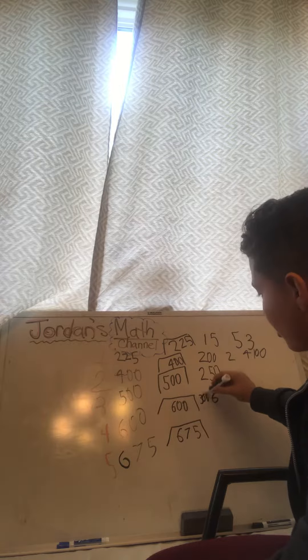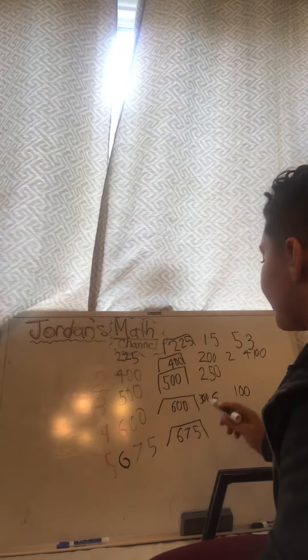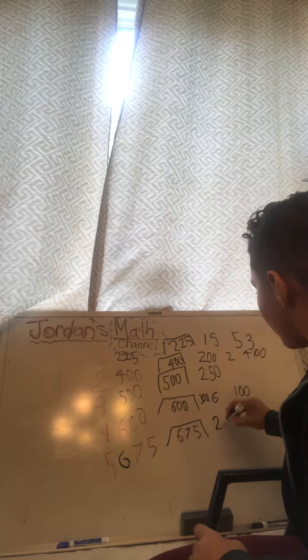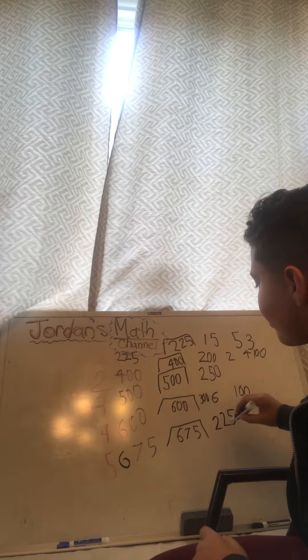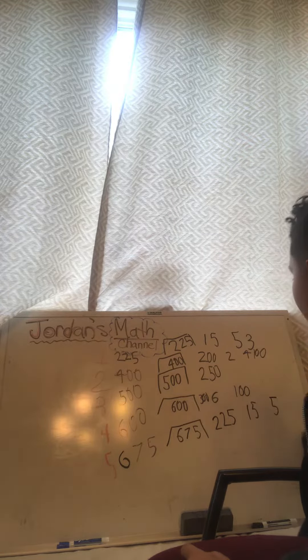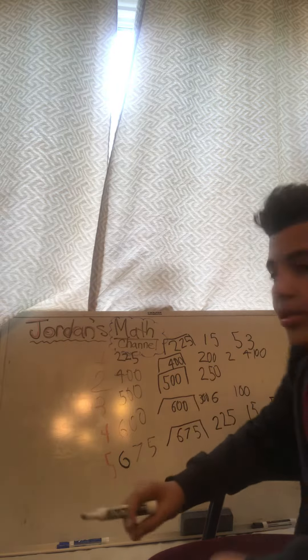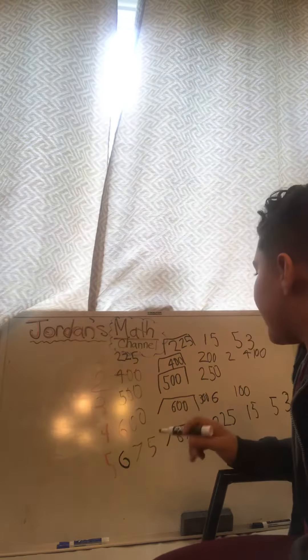Alright, a factor of 675 is gonna be a couple: 225, 25, 15, 5, 3. Okay, I guess that was it.